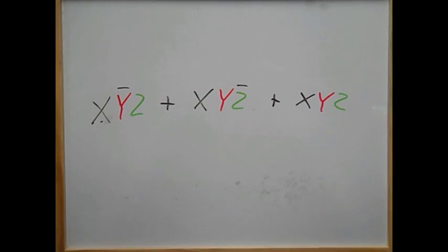So last time we were working on Farmer John's circuit. We had x, not y, and z, or x, y, and not z, or x, y, and z.